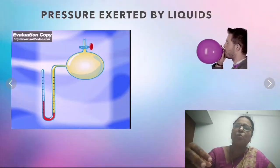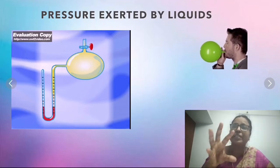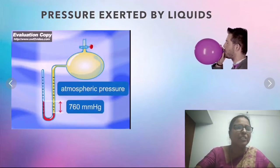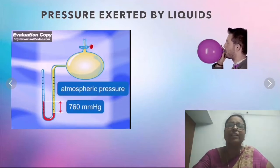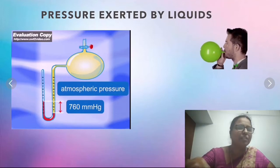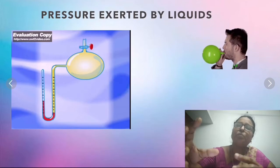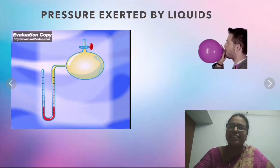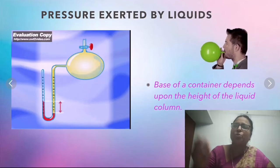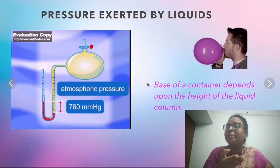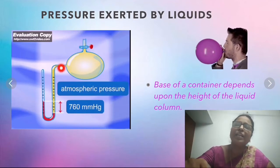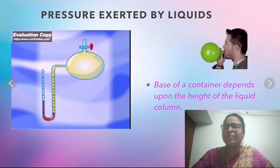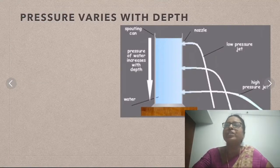So when you are adding water, the balloon bulges and grows bigger. When the height of the water column increases, the balloon bulge increases. This shows that the pressure exerted by liquid at the base of the container depends on the height of the liquid column.